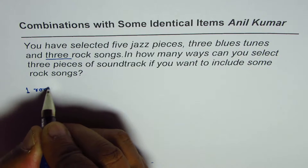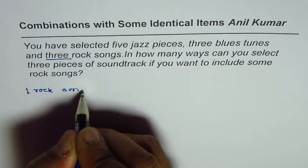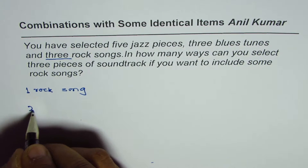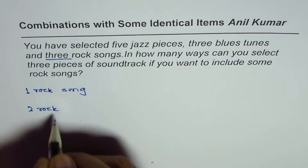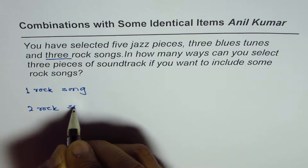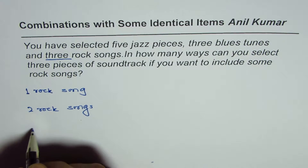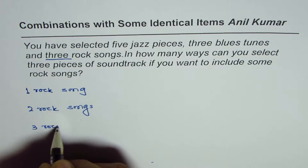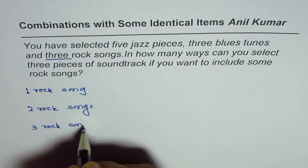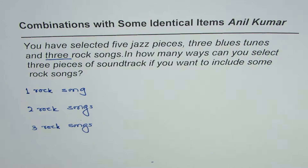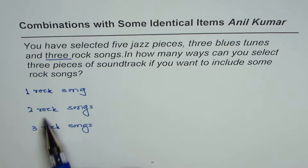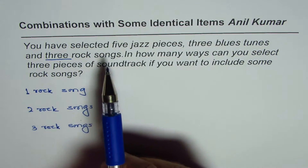...or you could have two rock songs, or you could have three rock songs. So that is how we have a special case where we have identical items as well as a restriction — the restriction being that we have to select at least one rock song.